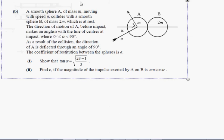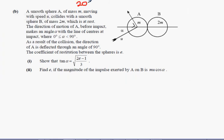This is Collision's 2003-5B, and you can see that there are masses of M and 2M. Now make sure that's a common mistake. A smooth sphere A of mass M moving with speed U collides with a smooth sphere B of mass 2M, which is at rest. The direction of motion of A before impact makes an angle with the line of centers where A is an acute angle. As for all the collision, the direction of A has to deflect it through an angle of 90 degrees. The coefficient of restitution between two spheres is E, show that tan alpha equals the square root of 2E minus 1 all over 3.